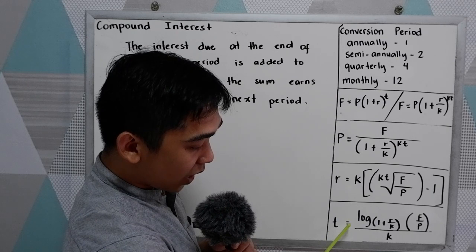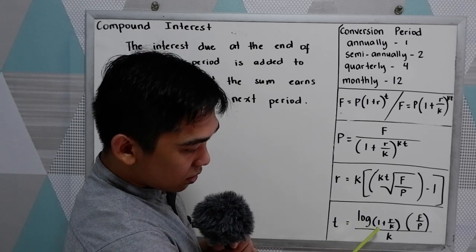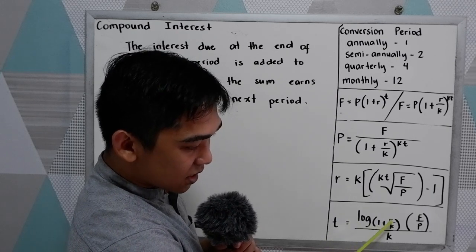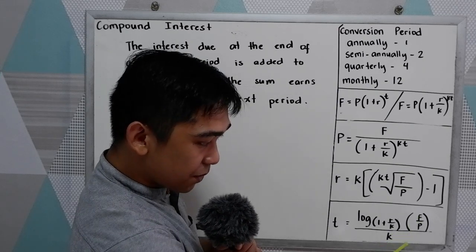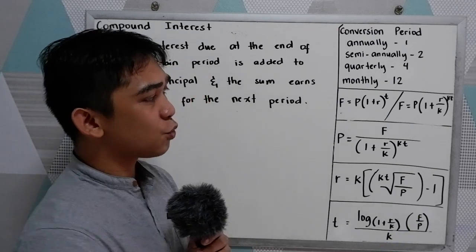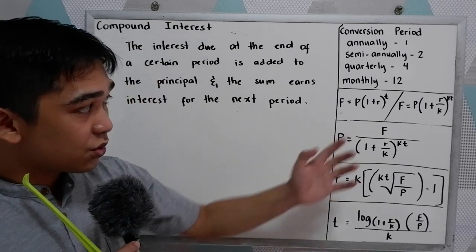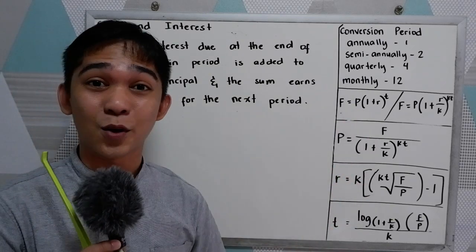And time, if the unknown is time, we have log of base 1 plus R over K times F over P all over K. To better understand, we're going to use these different formulas in our examples.